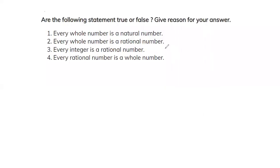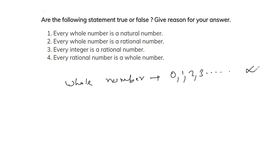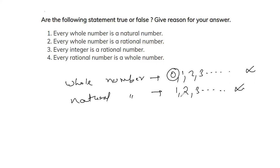The next question involves true or false statements with reasons. Part one: every whole number is a natural number. Whole numbers start from 0, 1, 2, and go up to infinity. Natural numbers start from 1 and go up to infinity. Since 0 is a whole number but not a natural number, this statement is false. Except for 0, every whole number is a natural number.